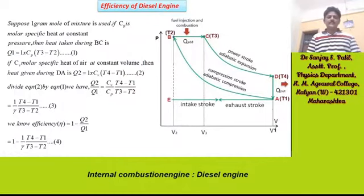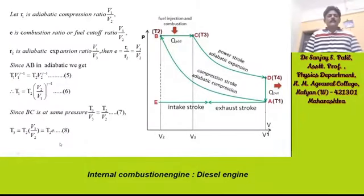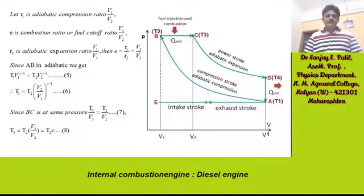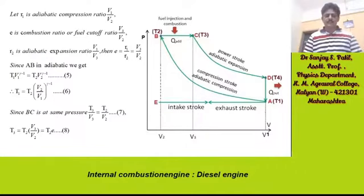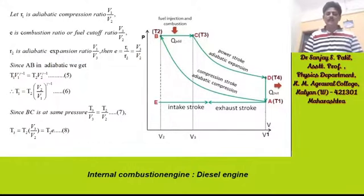We know efficiency eta = 1 − Q2/Q1, which is equation 4. Let R1 be the adiabatic compression ratio = V1/V2, E be the combustion ratio or fuel cut-off ratio = V3/V2, and R2 be the adiabatic expansion ratio = V1/V3. Then E = R1/R2 = V3/V2.